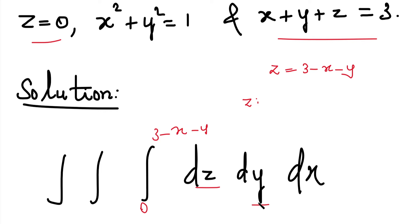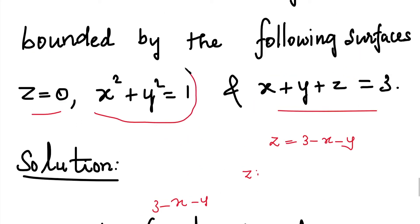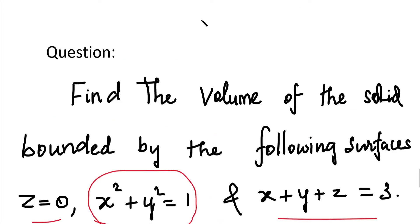Then for the second integration with respect to dy, we need to find the limits of y and x. For the y and x limits, we use the second equation x² plus y² equal to 1. From this equation, we can write y² equal to 1 minus x².